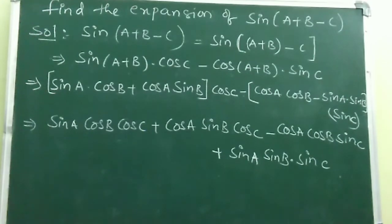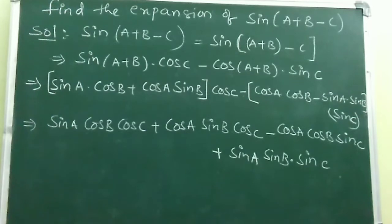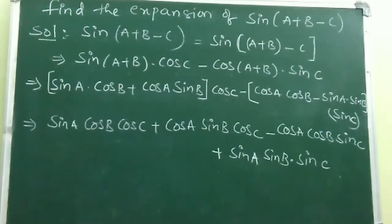This gives: sin A·cos B·cos C + cos A·sin B·cos C - cos A·cos B·sin C + sin A·sin B·sin C. This is the expansion of sin(A + B - C). Whenever three or more angles are given, if you know the formulae substitute directly; if not, take any two angles together and convert to A ± B form.